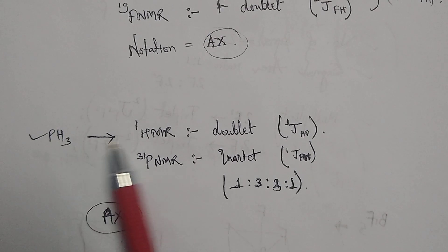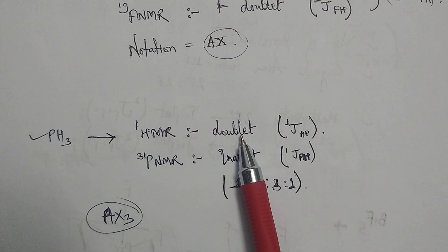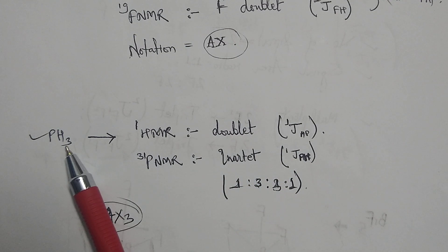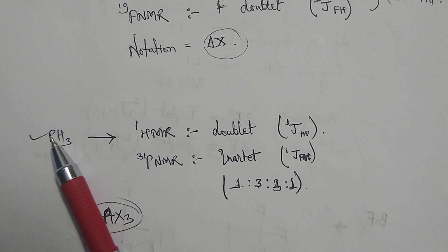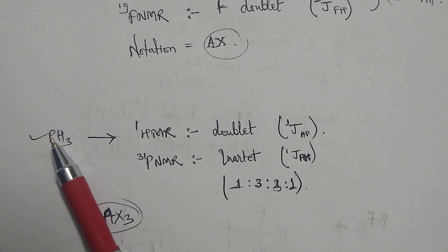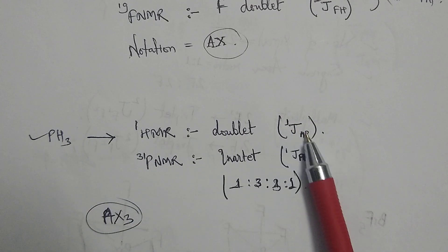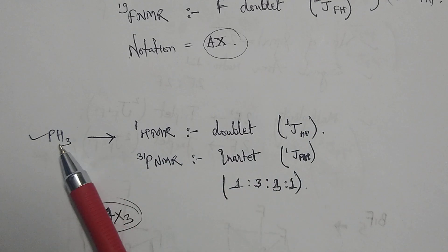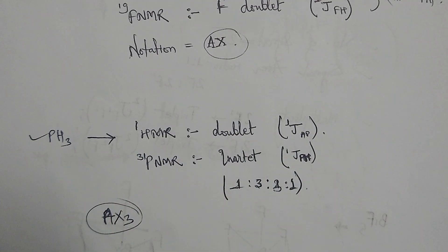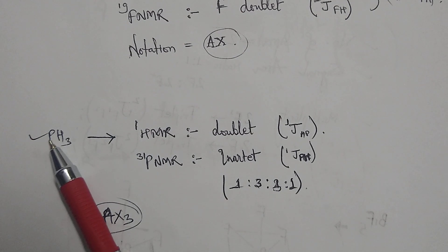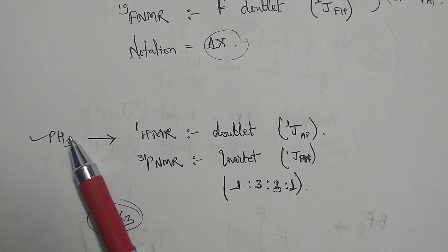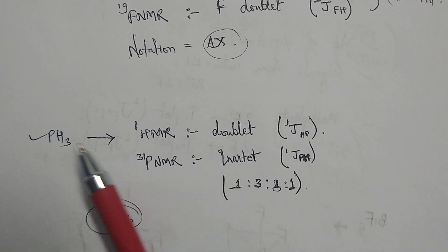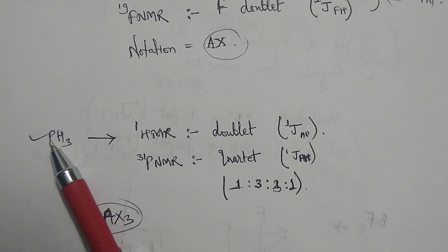Similarly, we can move to another example: the PH3 molecule. If we do the proton NMR we will get the doublet signal for the protons, because phosphorus and the proton are attached by a single bond. With this one-bond coupling constant we get the doublet signal for the proton as it couples with the phosphorus. Both phosphorus and the proton here are concentrated nuclei.